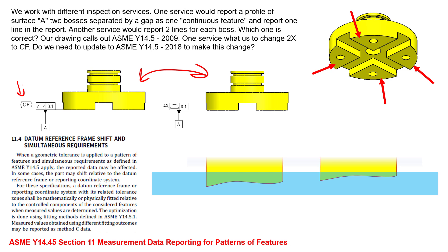Even though the 2009 standard doesn't verbally say in any of the text that you can apply it to a flat planar surface, in the 2018 standard they come out and explicitly say that you can apply this to flat planar surfaces as well as features of size. In my personal opinion, you can use the continuous feature in 2009 on both planar surfaces and features of size and be perfectly fine. You can apply this continuous feature to something like the flatness symbol, or also to a profile of a surface controlled back to other datums.